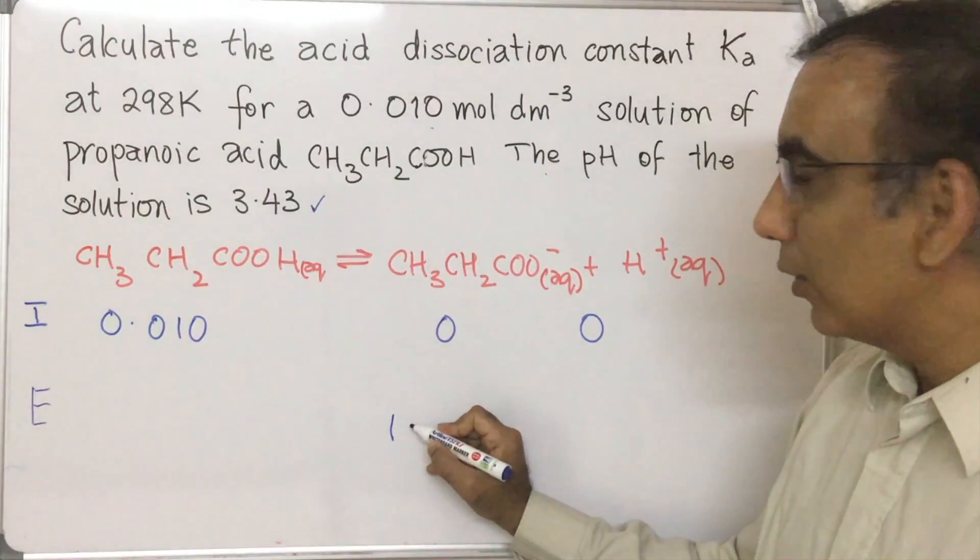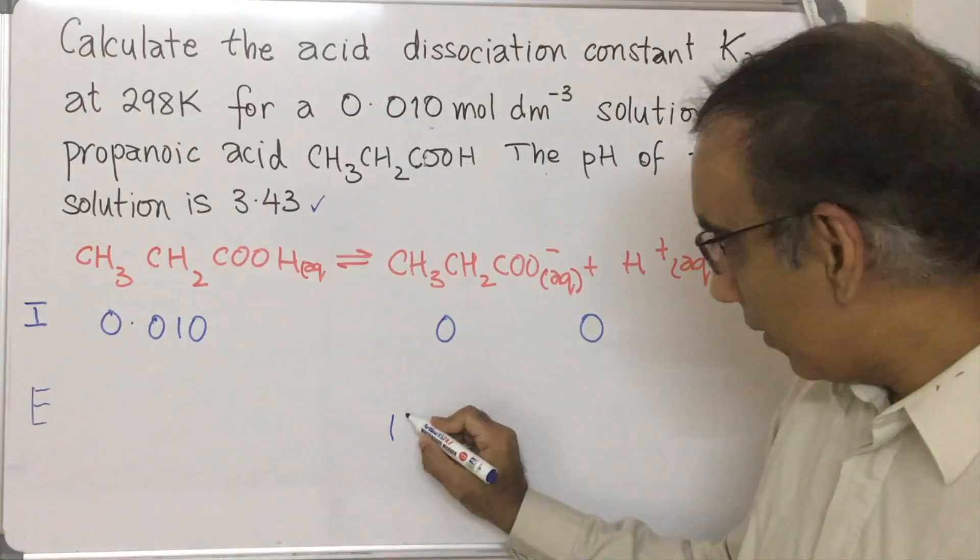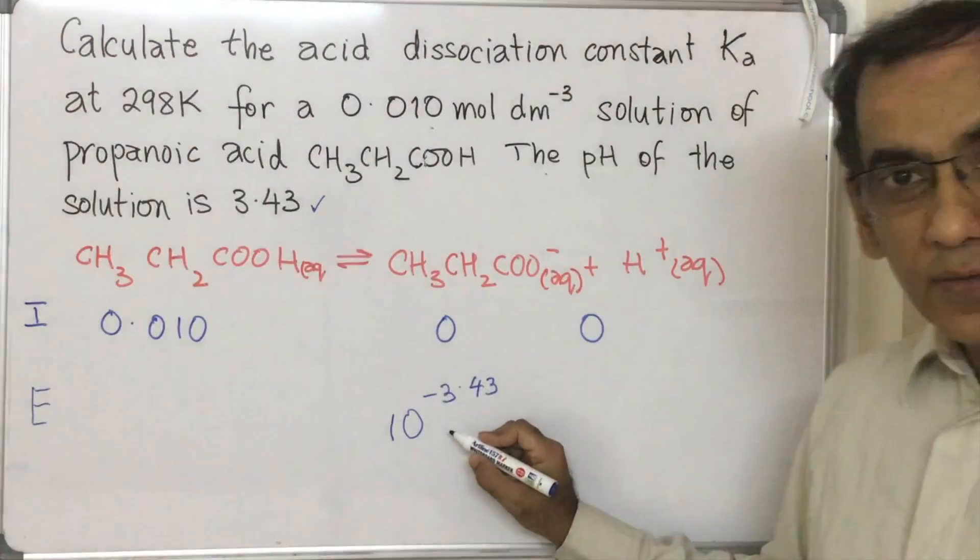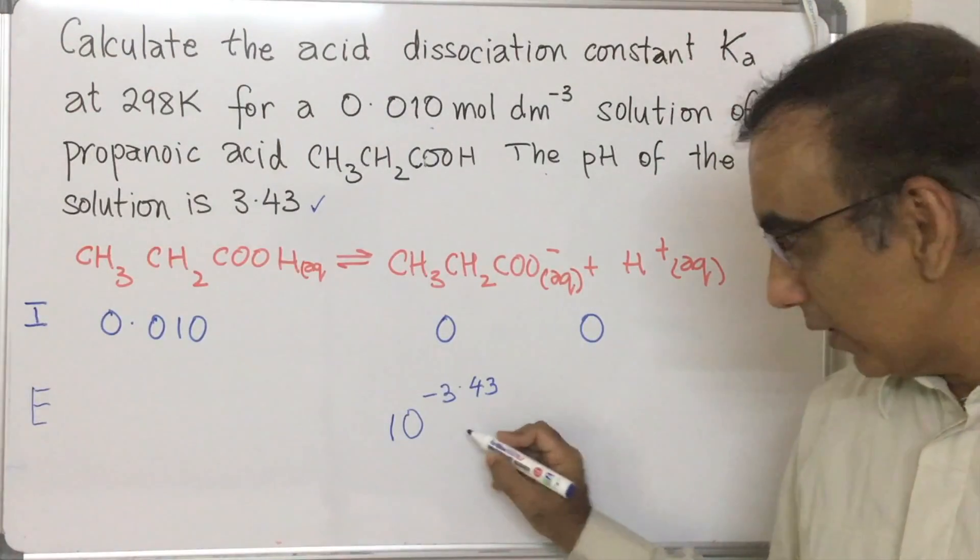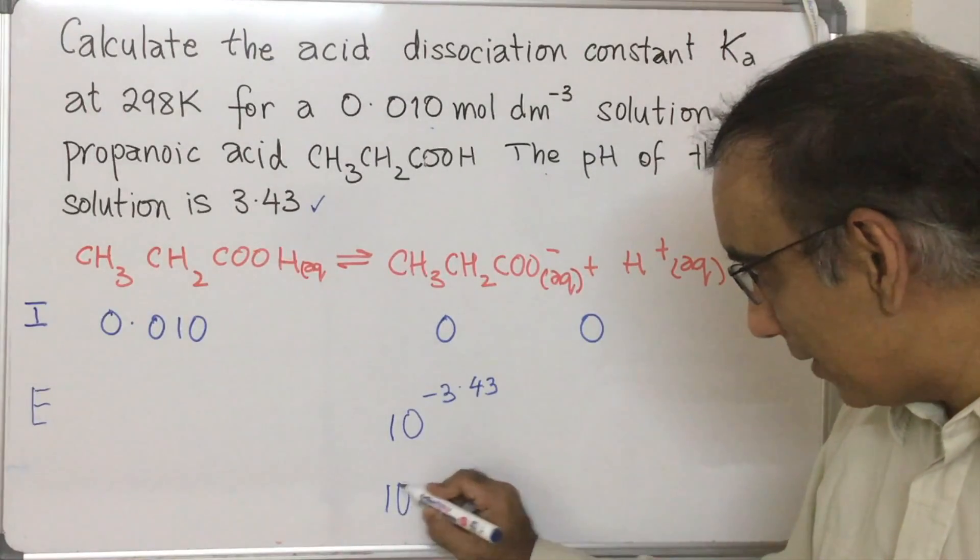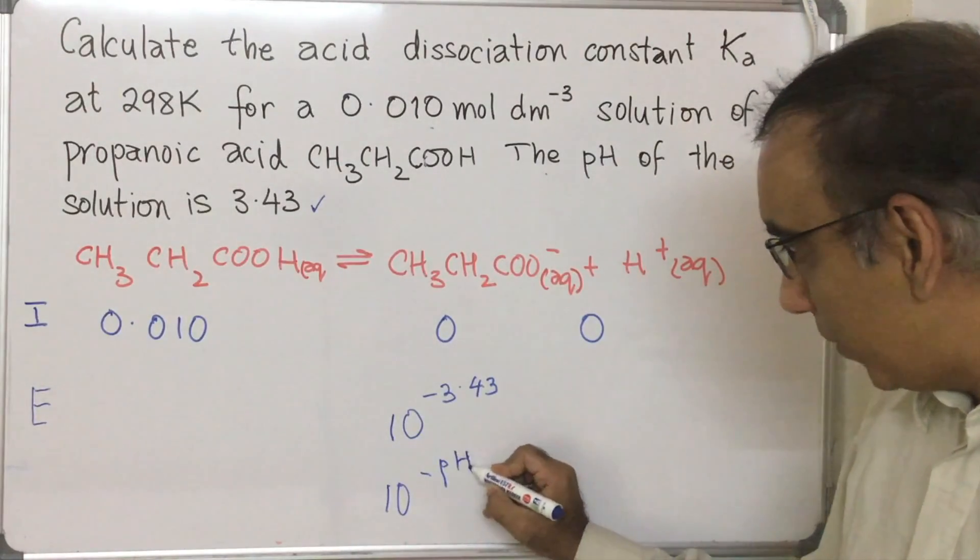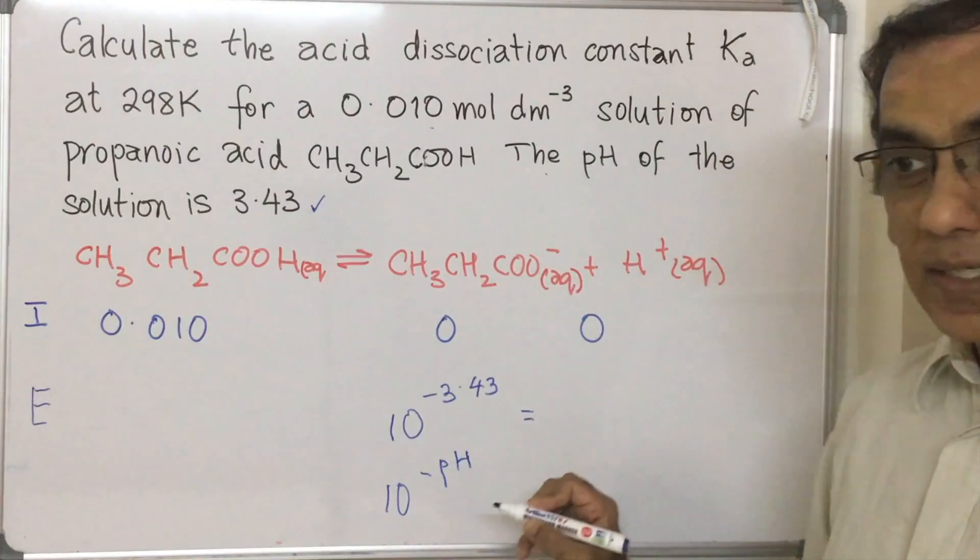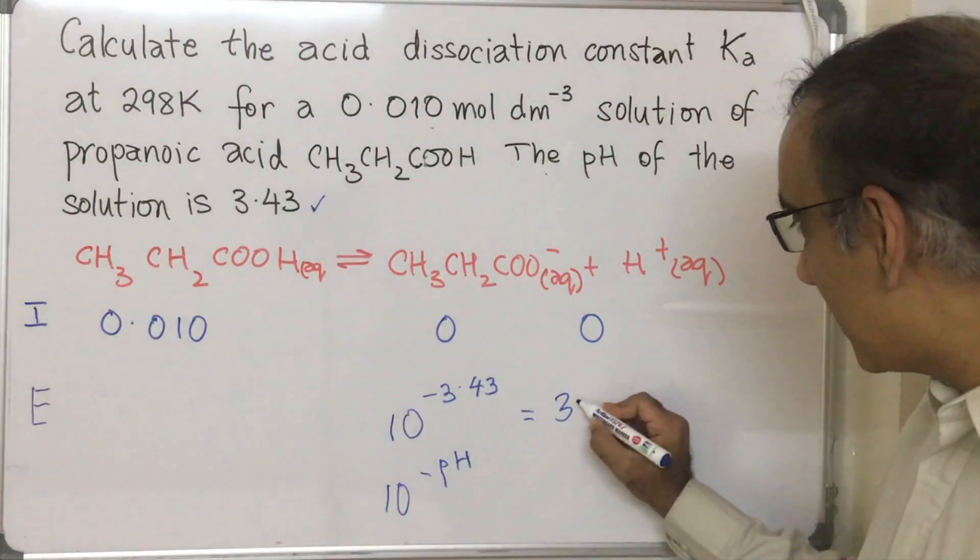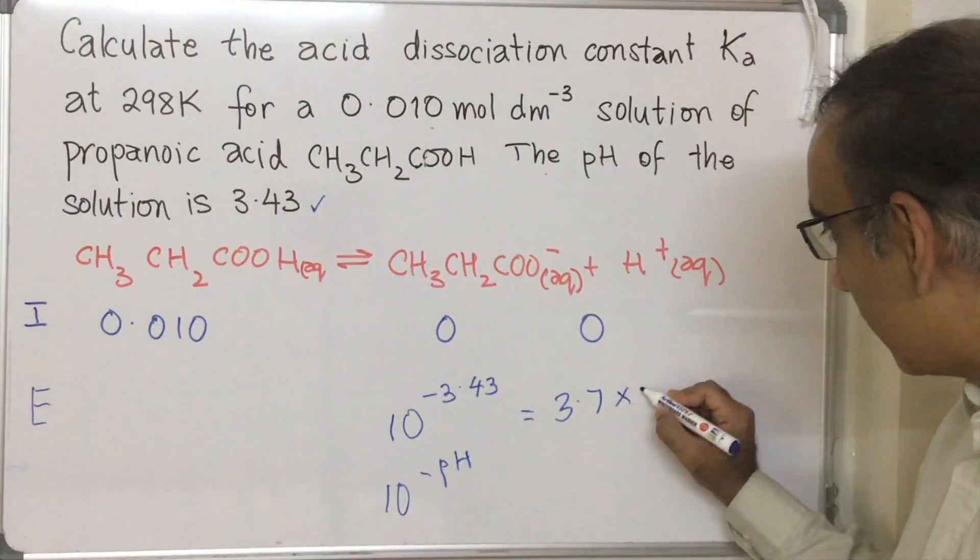So reversing the pH formula, which is taking the anti-log of 3.43, or using this expression, 10 to the negative 3.43 into your calculator, which is the same as 10 to the negative whatever pH value you have. In this case, it comes to 3.7 by 10 to the power of negative 4.